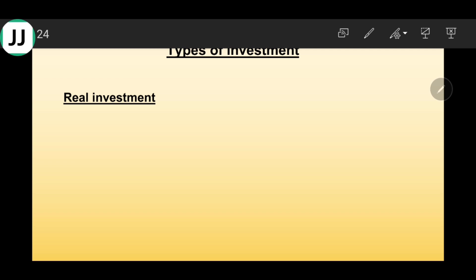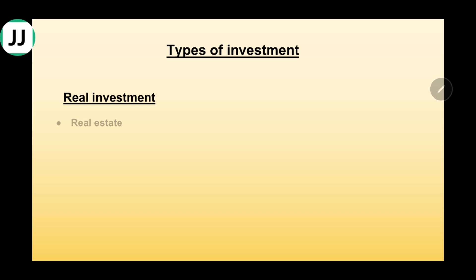Examples of real investment: first, real estate — a tangible investment. Second, commodities like gold or any kind of metal or anything that has some value. Then bullion, jewels, precious stones, and so on. Art is also an actual form of collection — it's a way of storing wealth. Antique pieces, sculptures, paintings — all of these are things of value under real investment.